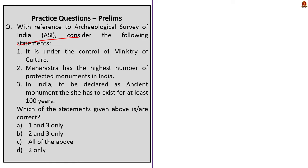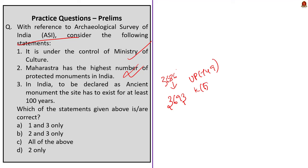The first practice question is about ASI, with three statements to evaluate. Statement 1 — it is under the control of the Ministry of Culture: correct. Statement 2 — Maharashtra has the highest number of protected monuments in India: incorrect. There are 3,693 centrally protected monuments under ASI; Uttar Pradesh has the highest number with 749, followed by Karnataka with 506 and Tamil Nadu with 413. Statement 3 — to be declared an ancient monument, the site must have existed for at least 100 years: correct, as per the AMASR Act 1958. The correct answer is option A: 1 and 3 only.